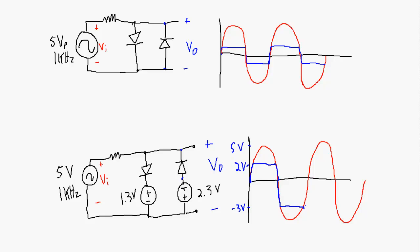When the input falls below minus 3 volts, the output will follow the input again. Neither diode is forward biased, and then we get up to plus 2 volts where clipping occurs due to the first diode, and way over in the negative cycle we have clipping due to the second diode. This just repeats over and over again, so we're able to clip at 2 volts and minus 3 volts.